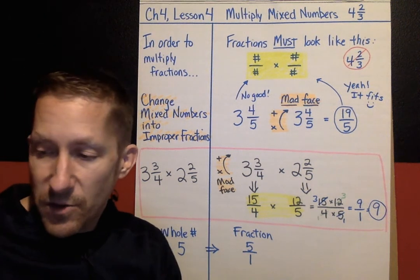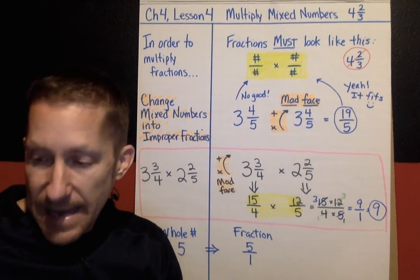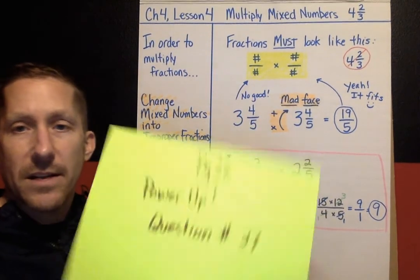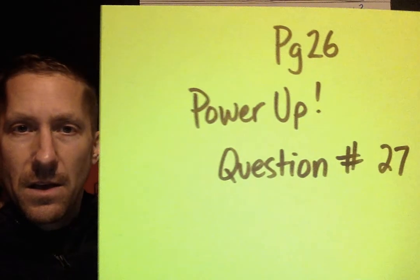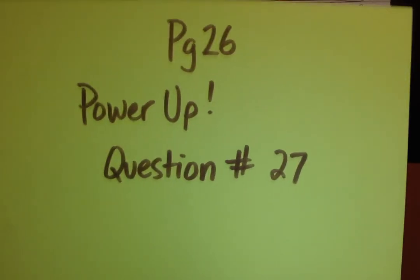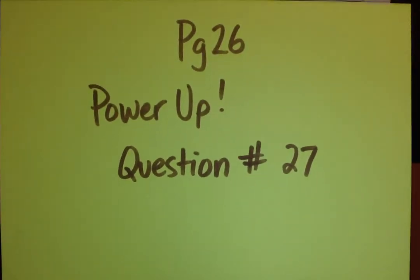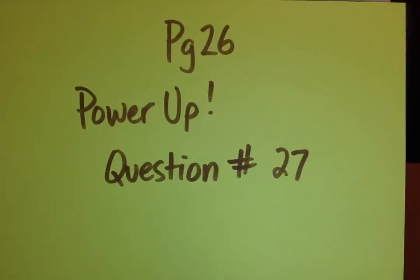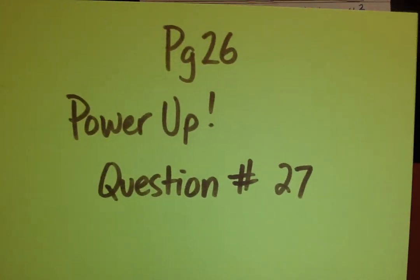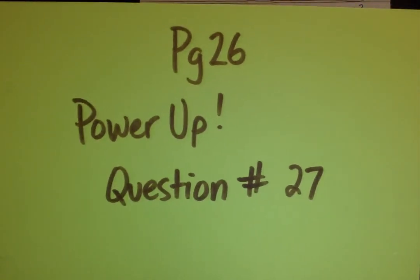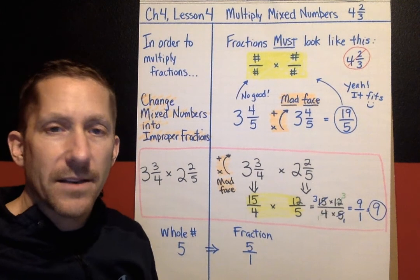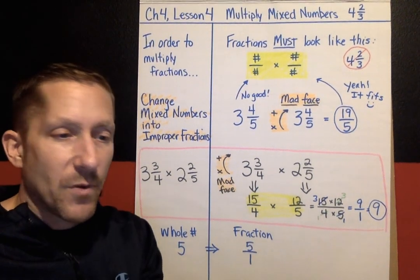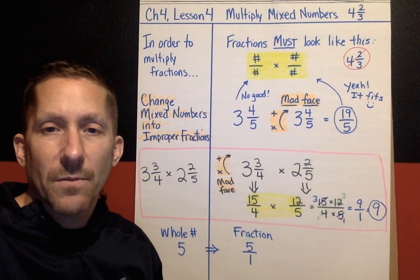That is it for Chapter 4, Lesson 4. Your hidden treasure today is back on page 26 in your workbook — Power Up question number 27. Be ready to explain that on the next lesson to win today's hidden treasure. I'll see you next time for Chapter 4, Lesson 5!